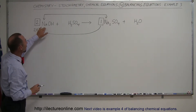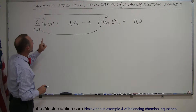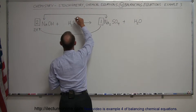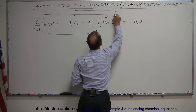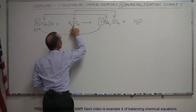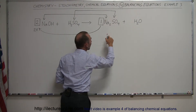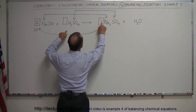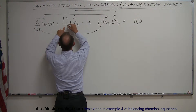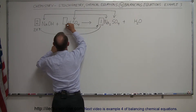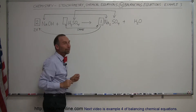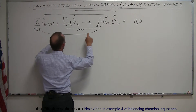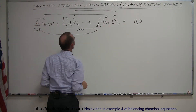Now we have sodium balanced. What else only appears once? Here we have a single sulfur on the left side and a single sulfur on the right side. The coefficient in front of sulfuric acid must be the same as in front of sodium sulfate, and since we have one there, we place one there. Now sulfur is balanced and sodium is still balanced.